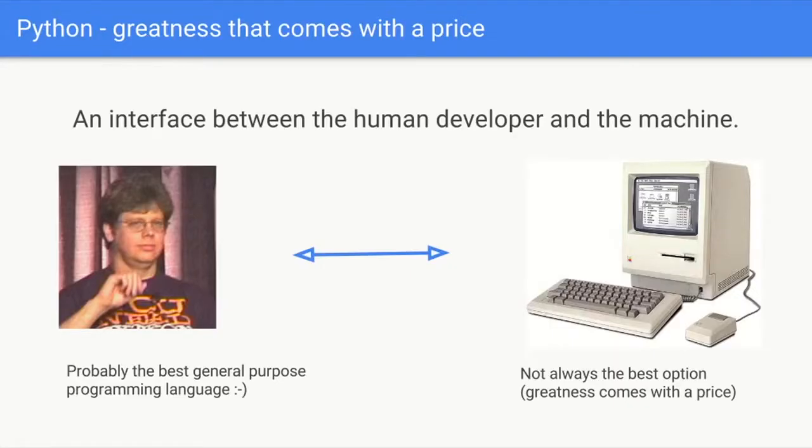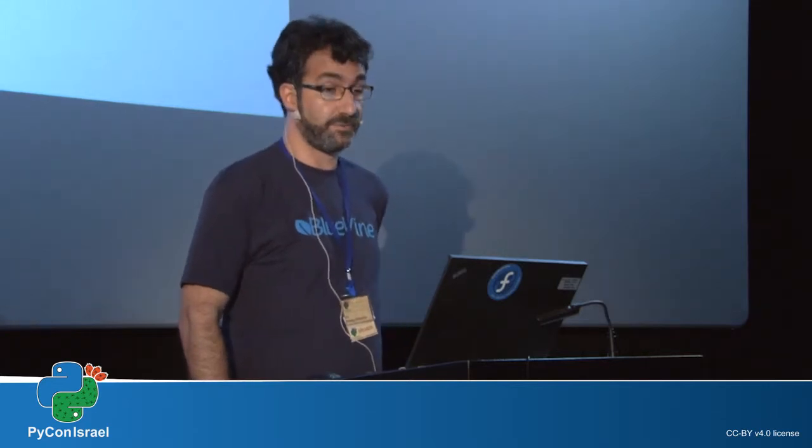A programming language can be seen as an interface between a human developer and a machine. Python is probably the best general-purpose programming language when it comes to the developer side of the interface. But when we talk about the machine side, it's not that clear. As you all know, Python has its limitations — and in a way, greatness comes with a price.